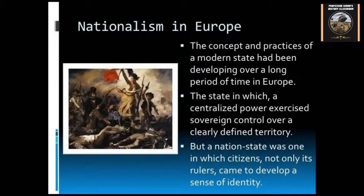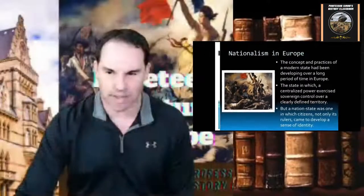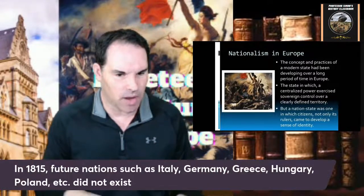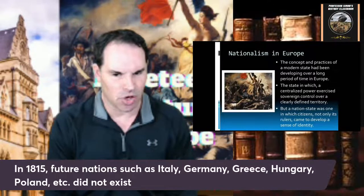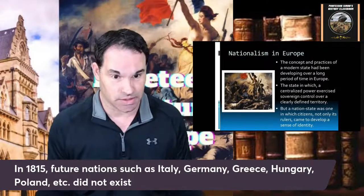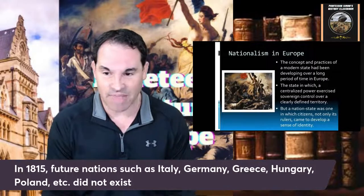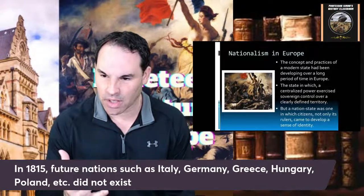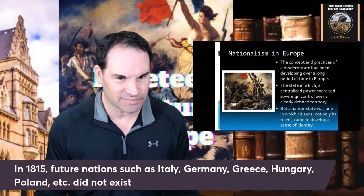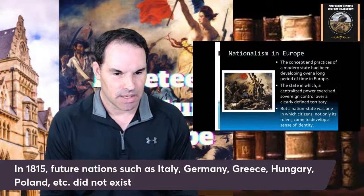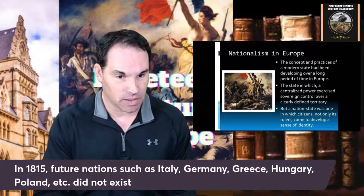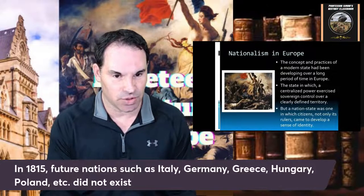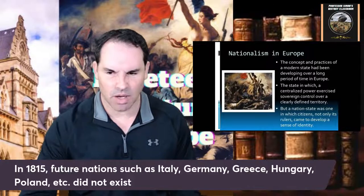In the early 19th century, countries like Italy, Germany, Greece, Hungary, and Poland didn't exist. The major European nations were Britain, France, Austria, Russia, Spain, and Portugal. Those were your major countries throughout Europe at the time. These new countries would come later, between the 19th and 20th centuries, especially the first two on that list — Italy and Germany — which we'll talk mostly about today.